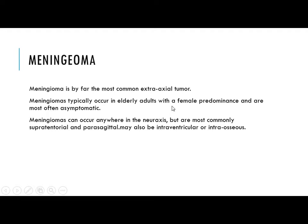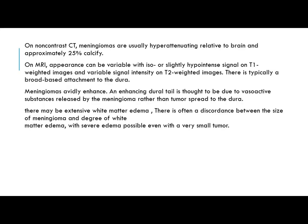Meningioma can occur anywhere in the neuraxis but is most commonly supratentorial and parasagittal, and can also occur in the intraventricular and intraosseous locations. On non-contrast CT, meningioma is usually hyper-attenuated relative to the brain and approximately 25% calcified. On MRI, appearance can be variable, either iso- or slightly hypo-intense on T1-weighted imaging and variable signal intensity on T2-weighted imaging, with typically broad-based attachment to the dura.